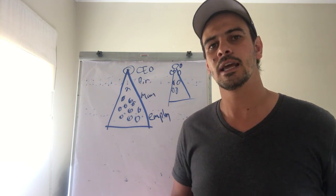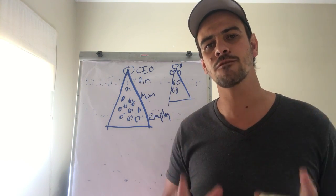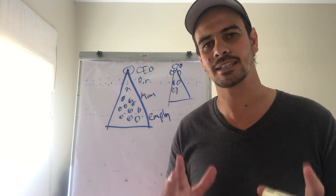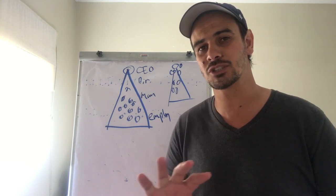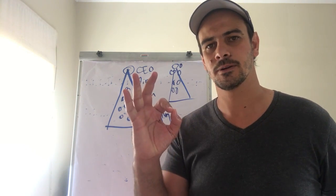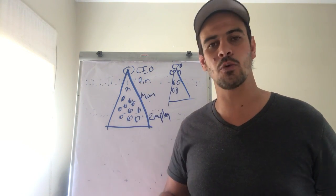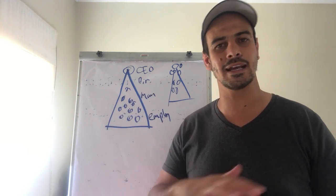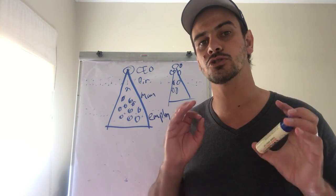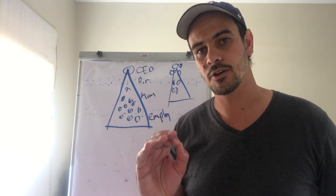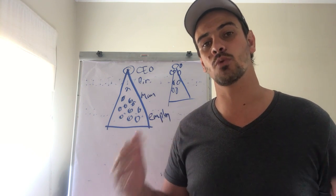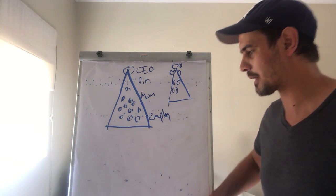You cannot be a network marketing company if you are a scam, if you are a pyramid, because network marketing, the business model is all about giving every single person the exact same opportunity. So everyone starts at zero, no one's got a benefit, no one's got more money, more people - it doesn't work that way.